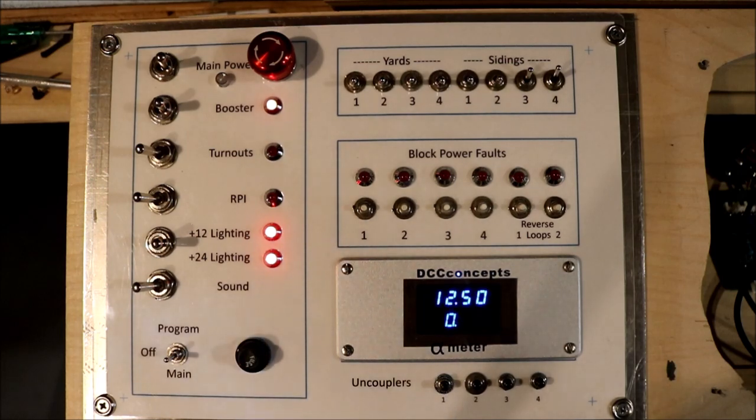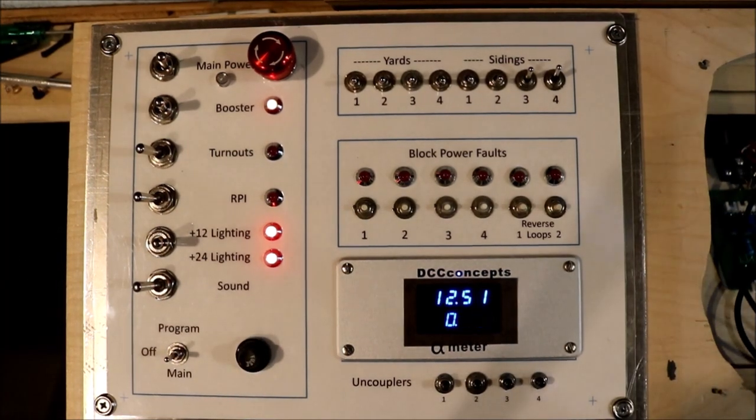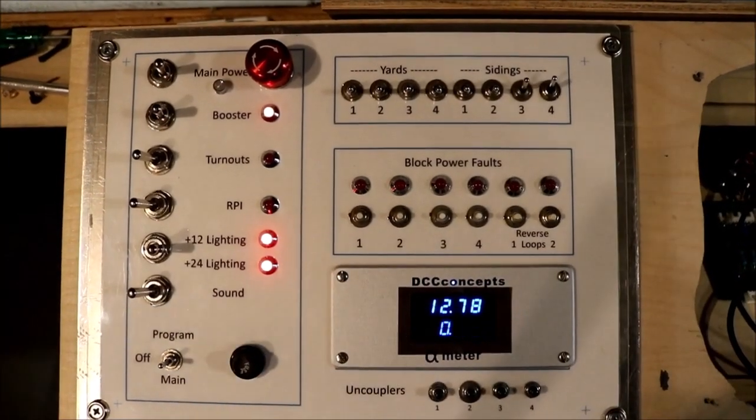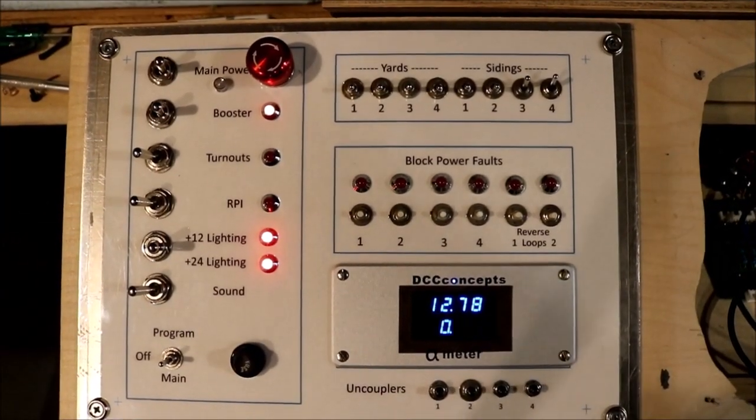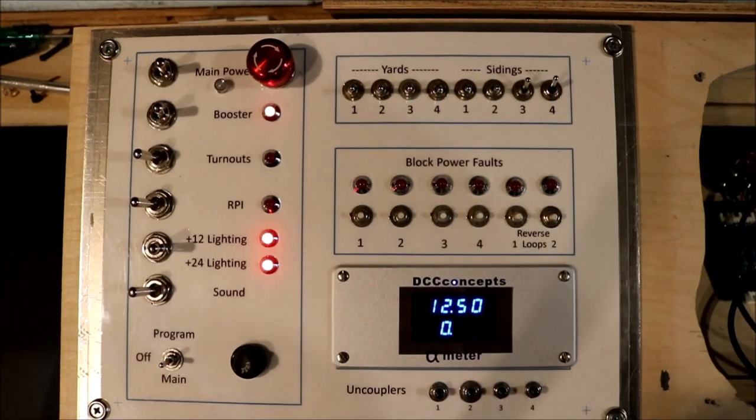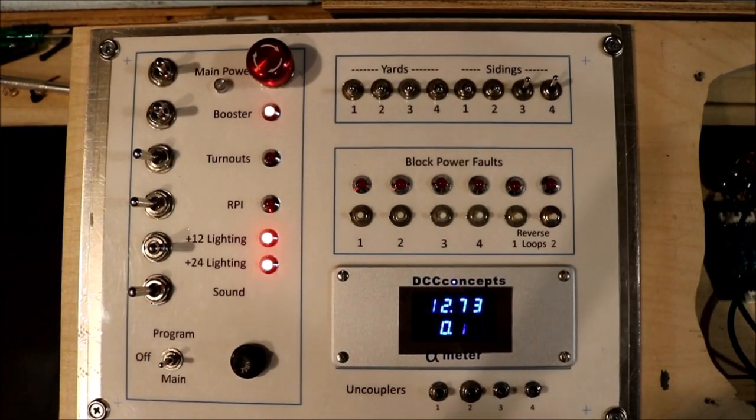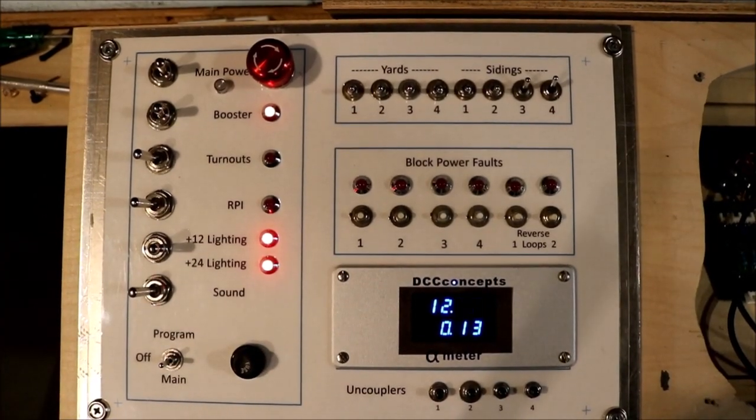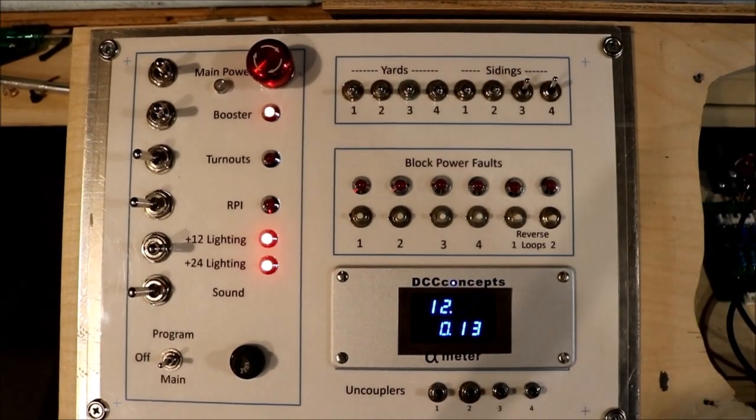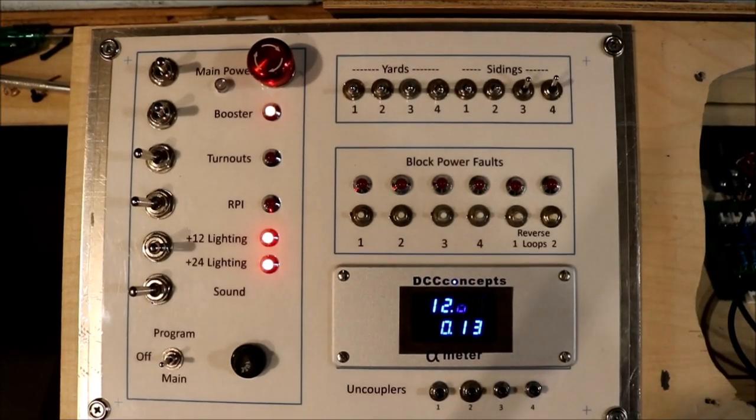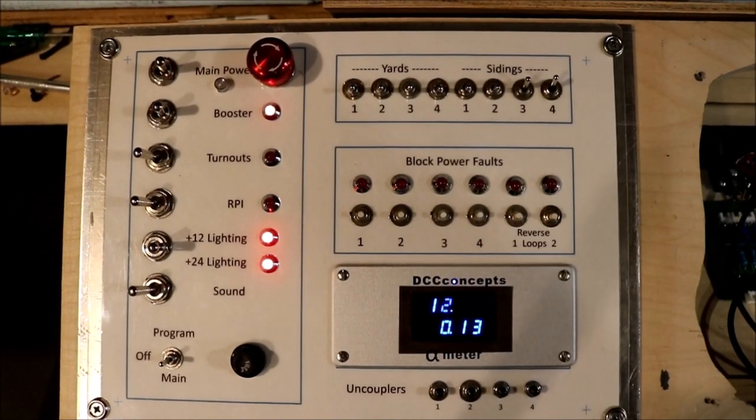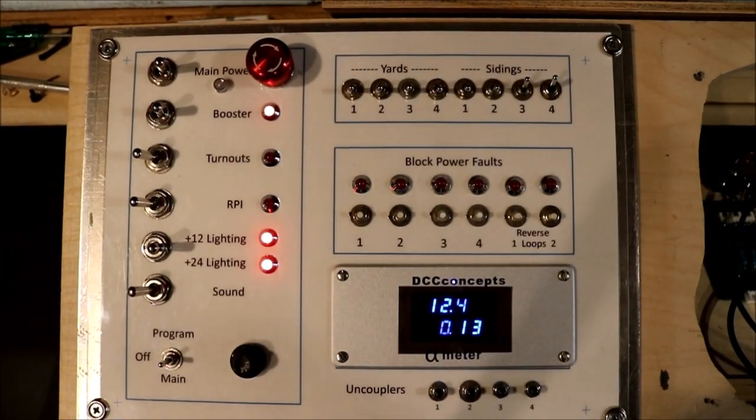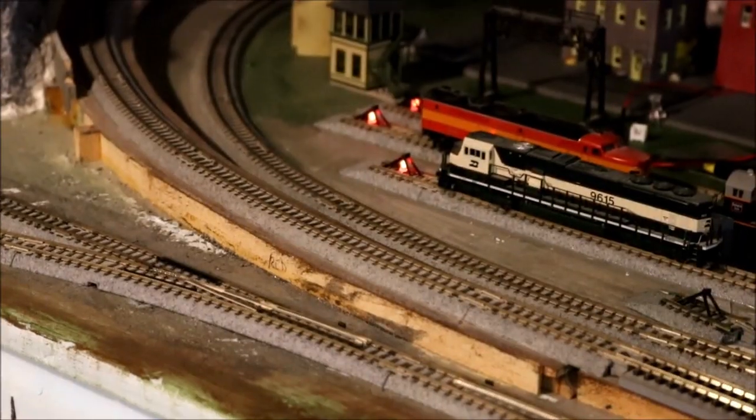So I decided to take one of the terminals, one of the lights that is on a bumper and dedicate it to actually a power district. So if the light is on, then it shows there's power on that track, that particular power district. If the light is off completely, then you know there's no power going to that.